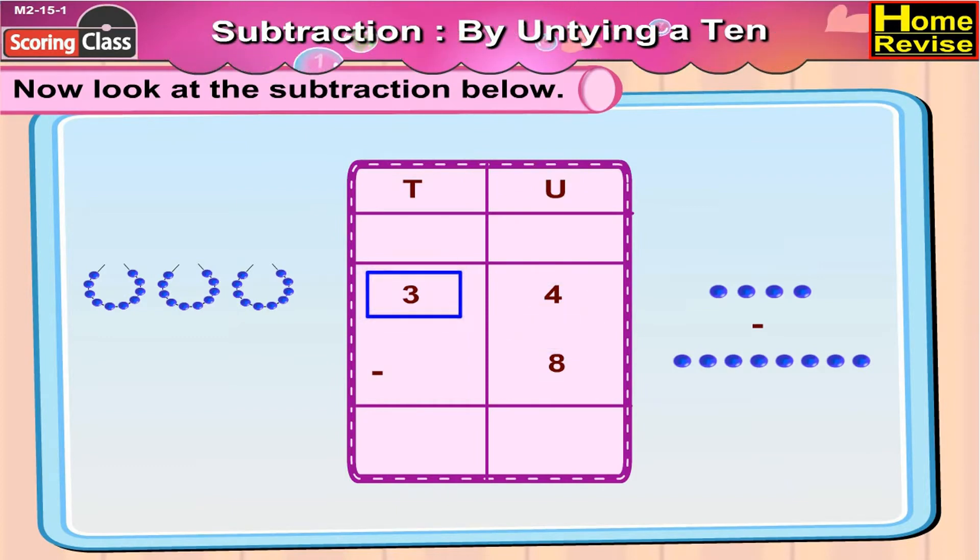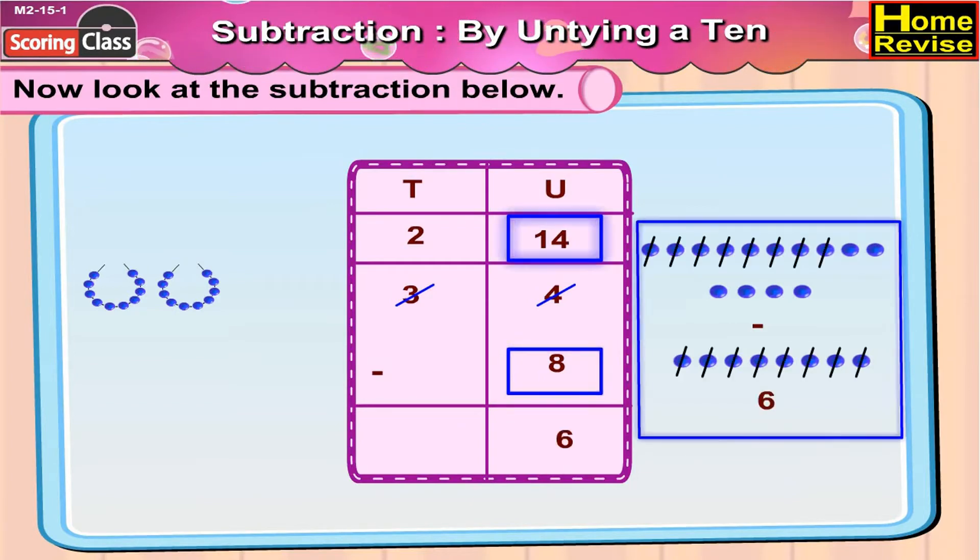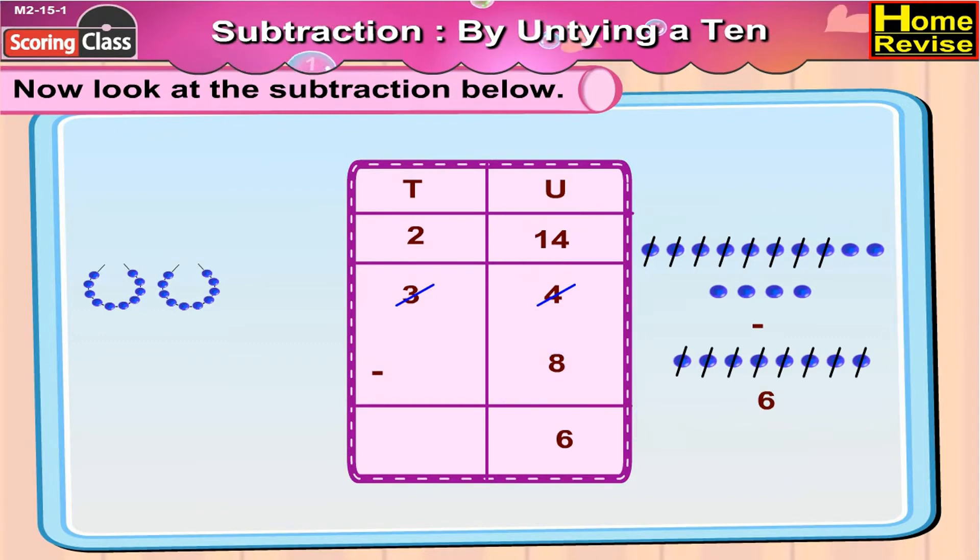On the units side we'll add that 1 ten, it will turn out to be 14 units. Now 3 tens 4 units equals 2 tens 14 units. So now we have 2 tens 14 units minus 8 units. 14 minus 8 is 6, and 2 minus 0 is 2. So 34 minus 8 is 26.